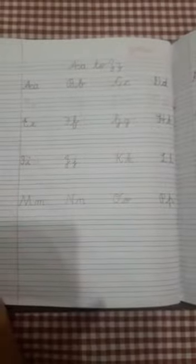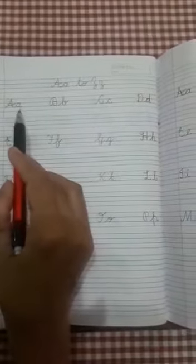Hello students, welcome to class UKG. Our today's subject is English and we are learning cursive letters A to Z, capital letters with small letters.